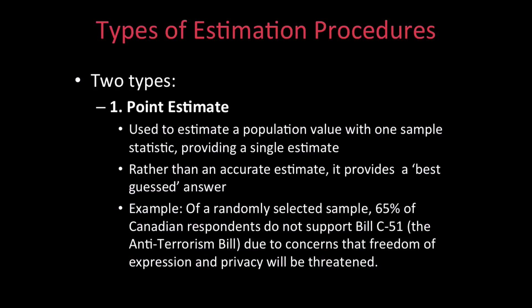There are two specific types of estimation procedures: point estimate and confidence intervals. Let's take a look at point estimating. Point estimating is used to estimate a population with one sample, providing a single estimate. While it does not necessarily give the most accurate estimate of a population, this type of sampling provides a best-guess answer.